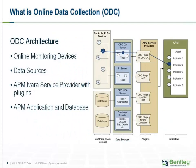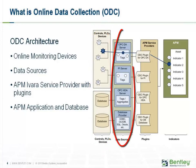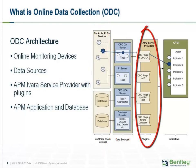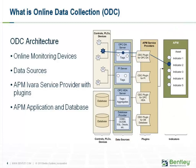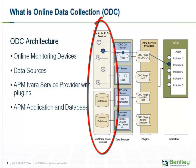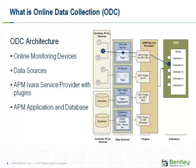Online Data Collection involves the following components: Online Monitoring Devices, Data Sources, an APM service provider with plugins, and the APM application and database. The Online Monitoring Device can be any Programmable Logic Controller (PLC), Distributed Control System (DCS), Human Machine Interface (HMI), Process Database, and/or Process Historian.